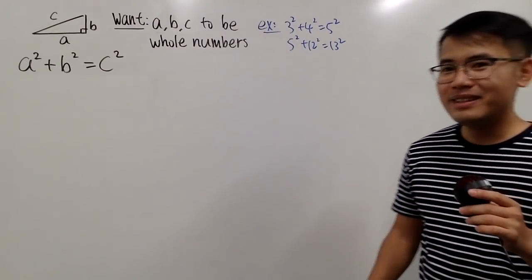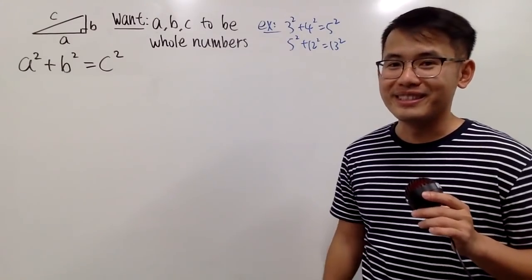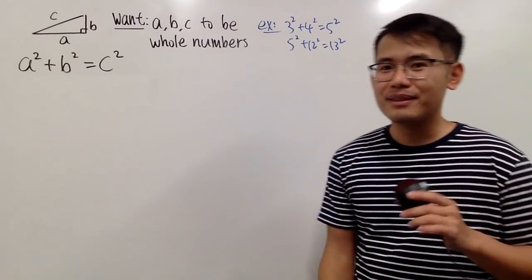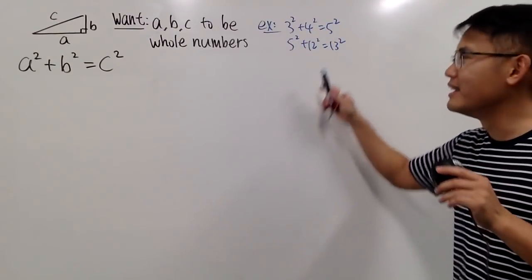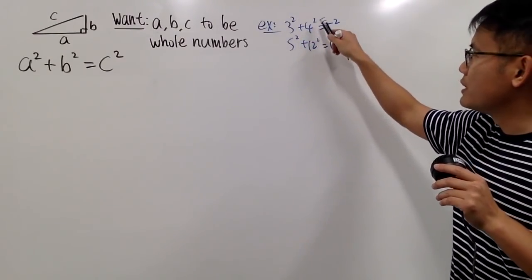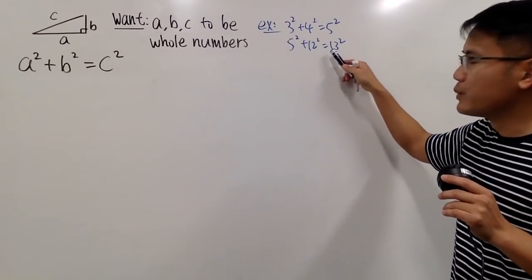And to make it more challenging, one easy way is to say, okay, I want A, B, C to be whole numbers only. Can we still make that happen? Yes, because I know you guys noticed, I gave you guys two examples right here already. The first one is 3 squared plus 4 squared equals 5 squared. And the second one is 5 squared plus 12 squared is equal to 13 squared.